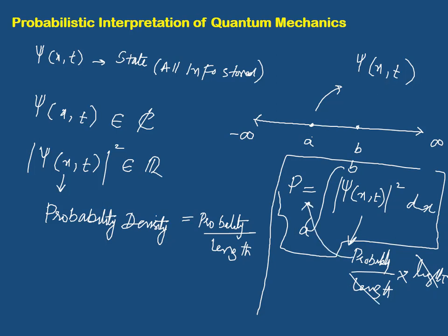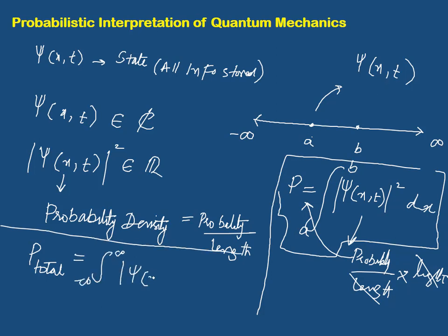Now if I ask what the total probability from minus infinity to plus infinity would be, it is very simple: integrate the mod square of the wave function — that is, the probability density — from minus infinity to plus infinity, and the total probability is always 1. So this is the total probability of finding the particle in the entire space, and the probability in any specific interval can be calculated in the same way.